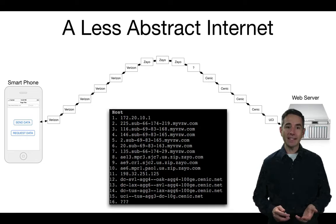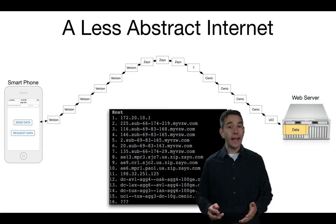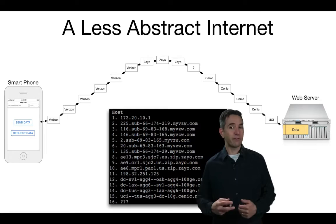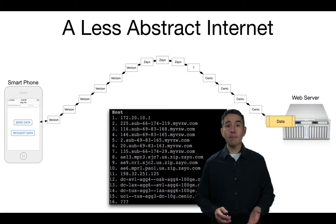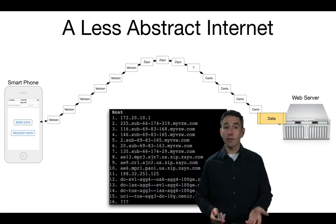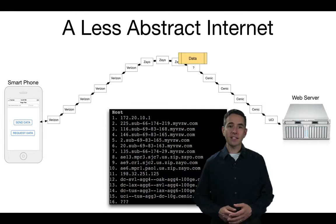When we send data, it gets broken up into packets on our phone and passed from one computer to the next all the way to the web server. Each computer along the way is owned by a different organization and connects to many different computers, not just the ones on this path. When data comes back from UCI, it may follow the same path or a different one, depending on whether computers have gone offline or there's congestion — just like taking a different road when there's car traffic.